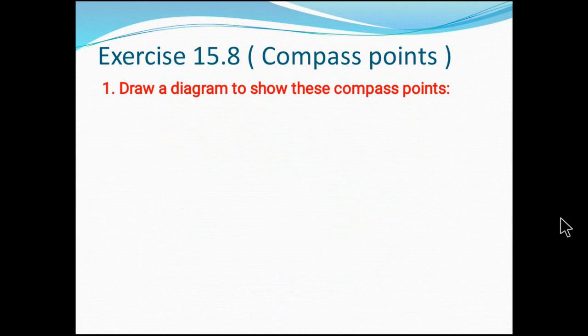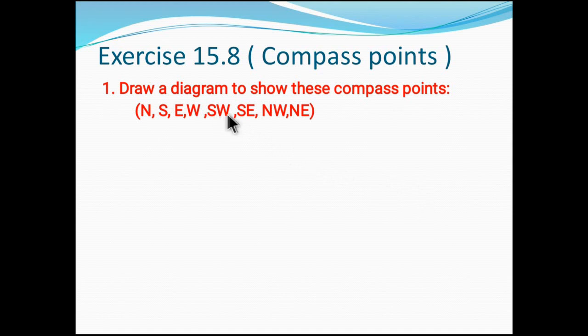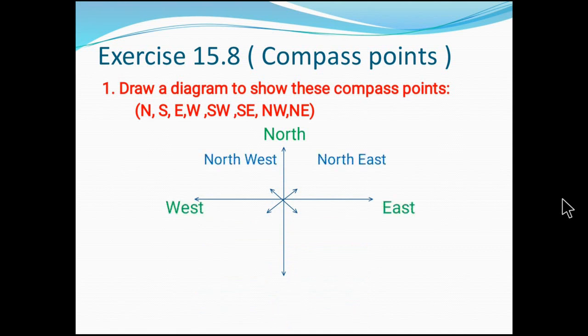Let's enter our exercise work. Question number one: Draw a diagram to show these compass points. The points are north, south, east, west, northeast, northwest, southeast, southwest. First, I have drawn a diagram. The first option, north, they must provide at the top side. Now rest of them you have to fill up. To fill up this, you have to remember: north exactly opposite should be south.